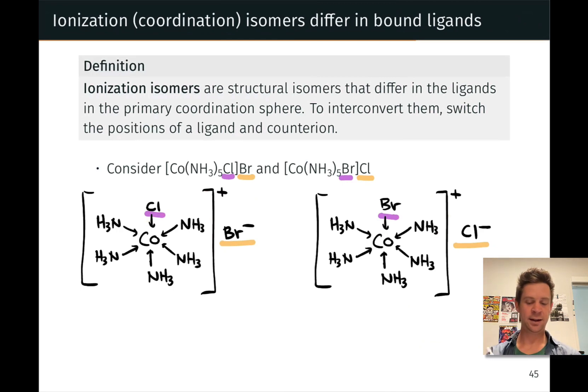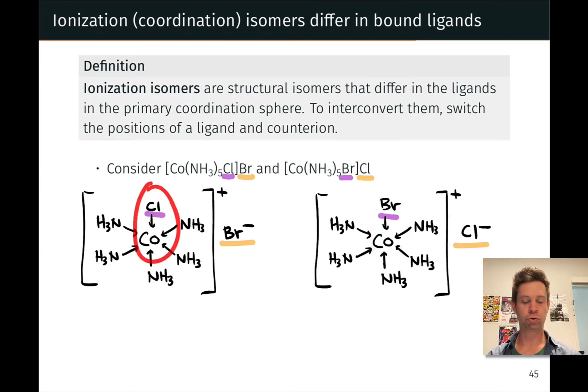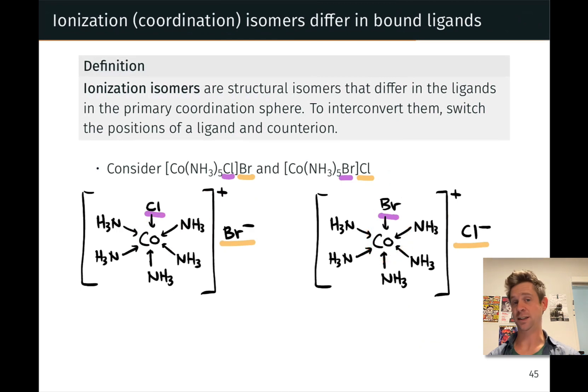Like linkage isomers, ionization isomers contain different bonds — different dative bonds. We have a cobalt-chlorine dative bond in one case and a cobalt-bromine dative bond in the other. So these will have very different properties, both physical and chemical.